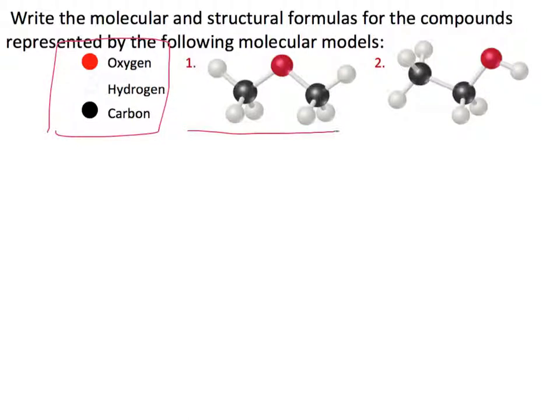If we look at this first example, what we see is that we have two black spheres, so it's two carbons. We have six white spheres, so we have six hydrogens. And we have one red sphere, so we have one oxygen.